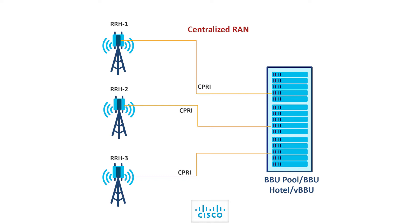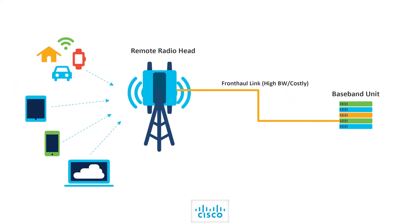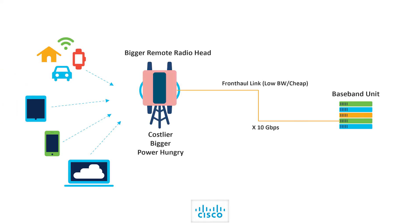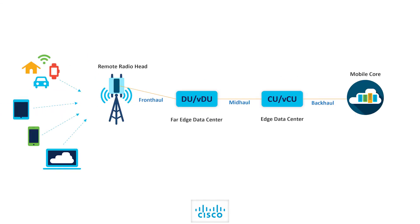BBU pool virtualization introduced the concept of shared processing. It was now possible to share the available processing resources among several sites and allocate extra processing when needed in different areas. With the ever-evolving RAN architecture and increasing volumes of traffic expected per user, this fronthaul link was experiencing very high bit rates and becoming non-affordable for network operators. One obvious method of reducing fronthaul bandwidth was placing more functions into the radio unit and processing the signals more before transmission over the fronthaul link. This also meant heavier, costlier and more power-hungry radio units.